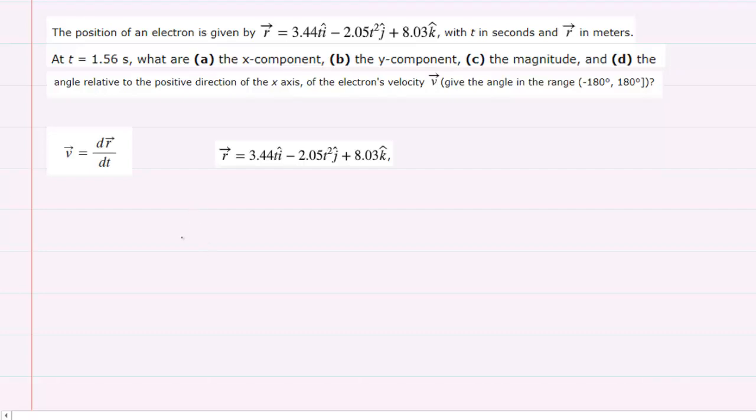In parts a and b, in order to find the x and y components of this electron's velocity at a time of 1.56 seconds, we're going to remember that in order to compute the velocity, we must take the derivative of the position function with respect to time.